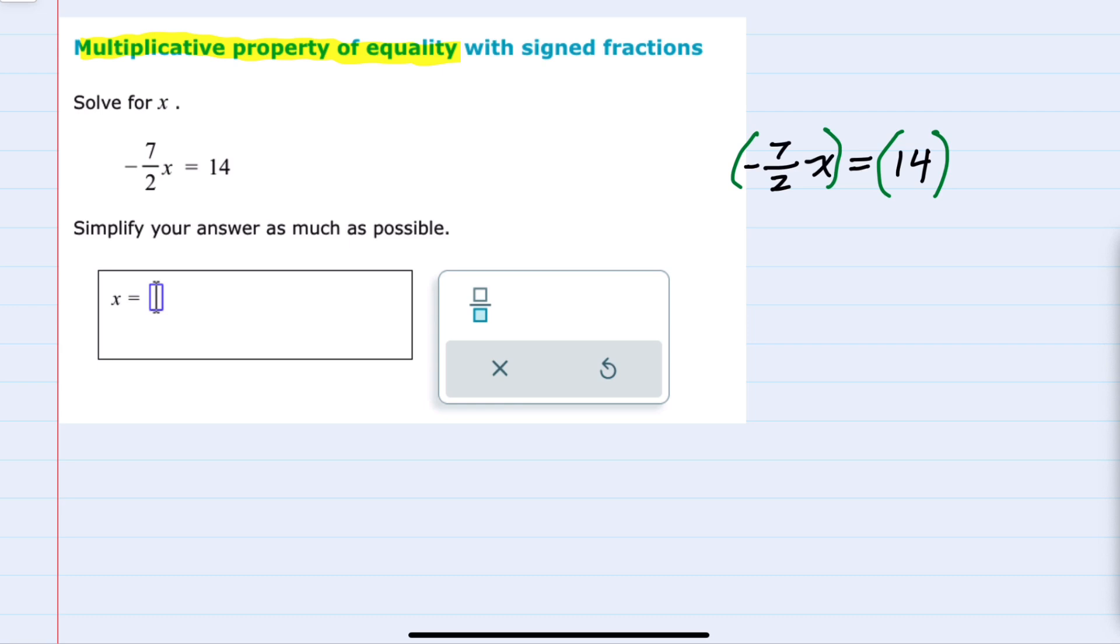Our question here is what do we need to multiply by to get the x by itself? To get the x by itself we see that this negative 7 halves is currently being multiplied by x.